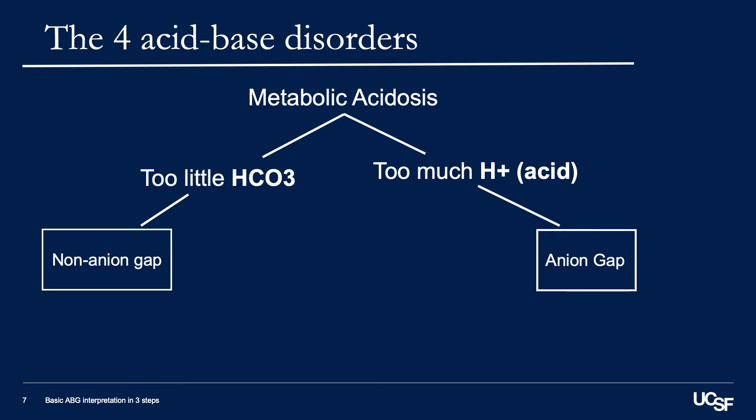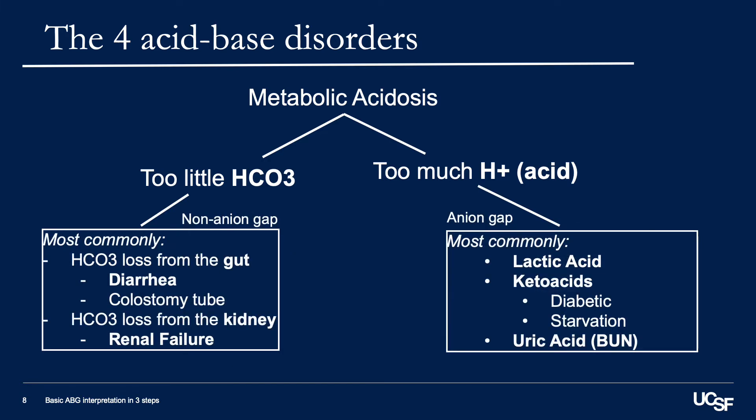Metabolic acidosis is the most common acid-base disorder you're likely to encounter in the hospital medicine setting. It can be thought of in two major buckets. Too much acid is called anion gap metabolic acidosis, because there's an anion in the blood that's unaccounted for. Too little bicarbonate falls in the bucket of non-anion gap metabolic acidosis. Anion gap metabolic acidosis is typically due to lactic acid, keto acids, or uric acid in acute or chronic renal failure. Non-anion gap metabolic acidosis is typically due to loss of bicarbonate, either through the gut or the kidneys.